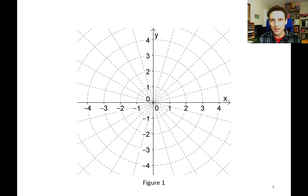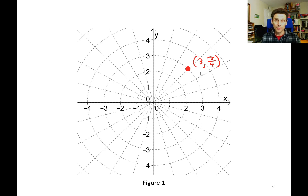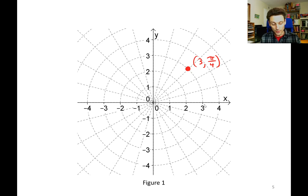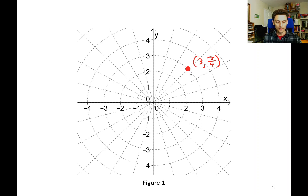Let's get a little bit of practice by plotting some points in polar coordinates. An example would be (3, π/4). This is not x equals 3 and y equals pi over 4 — this is r equals 3 and theta equals pi over 4. To plot this, first go to the angle theta, in this case pi over 4. Then go from the origin out 3 units along that pi over 4 line. That would land you at (3, π/4).